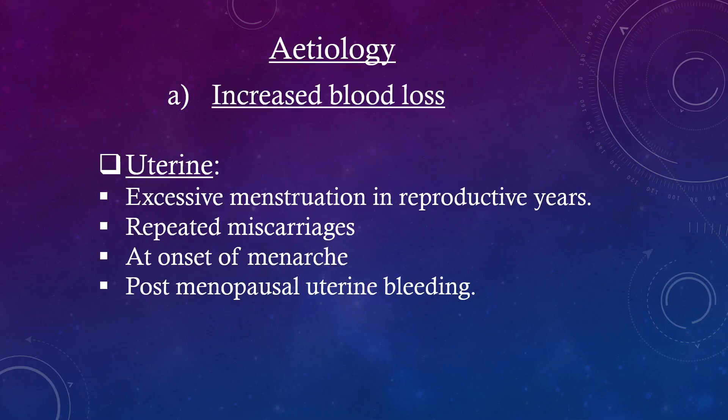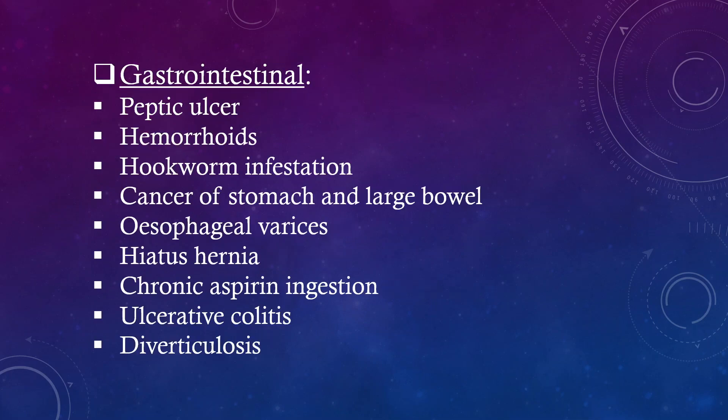Etiology: Increased blood loss. Uterine causes include excessive menstruation in reproductive years, repeated miscarriages, onset of menarche, and post-menopausal uterine bleeding. Gastrointestinal causes include peptic ulcer, hemorrhoids, hookworm infestation, cancer of stomach and large bowel, esophageal varices, hiatus hernia, chronic aspirin ingestion, ulcerative colitis, and diverticulosis.